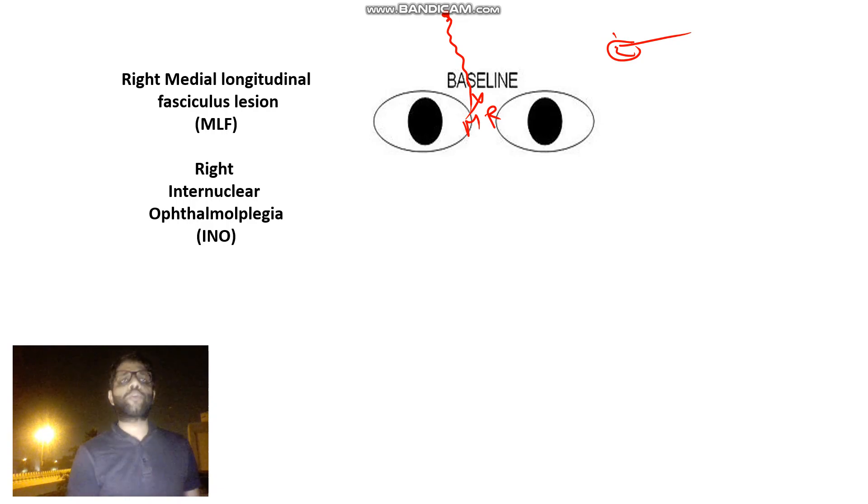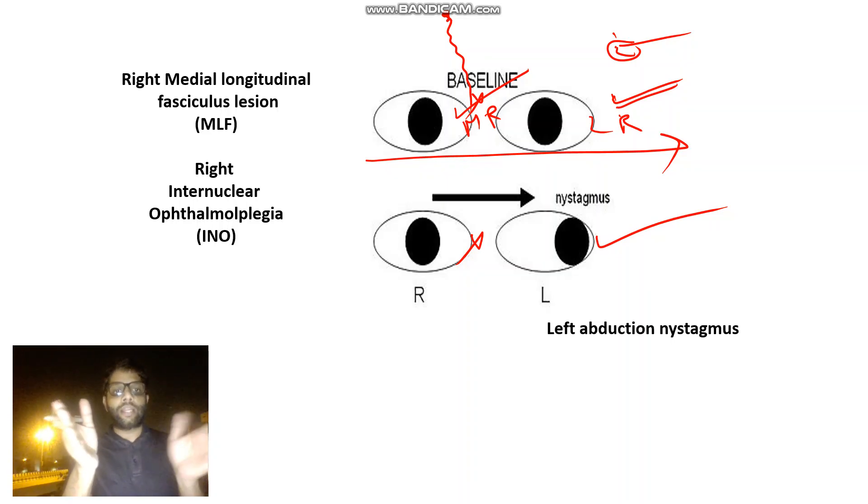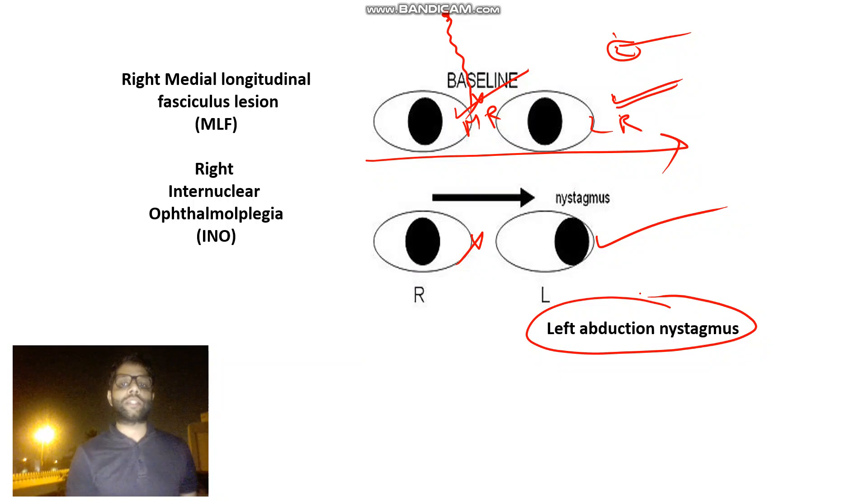But the problem will arise when the patient will make his right MR move. And that is in levoversion. In levoversion, left LR and right MR are working as yoke muscles. Left LR is working properly. So left eye will go towards left side. Yes, left abduction. But right MR is not able to come, is not able to adduct. And if yoke muscles, one is not able to move properly, other is moving. That will generate horizontal nystagmus. That is ataxic horizontal nystagmus. Here left eye is moving, abducting. So left abduction nystagmus. And right MLF lesions.